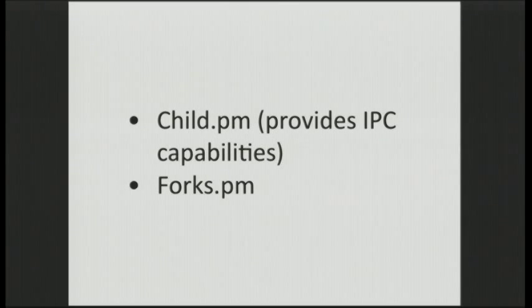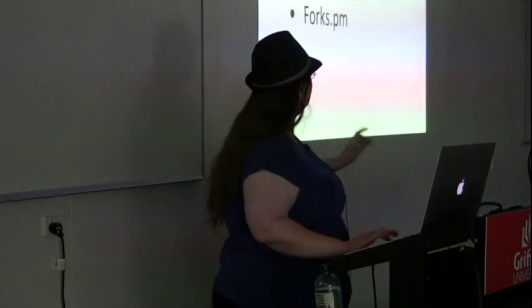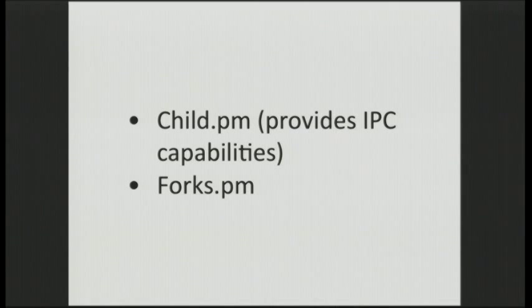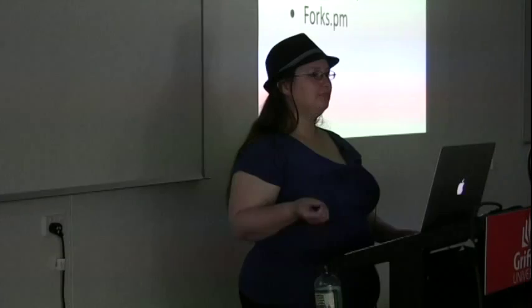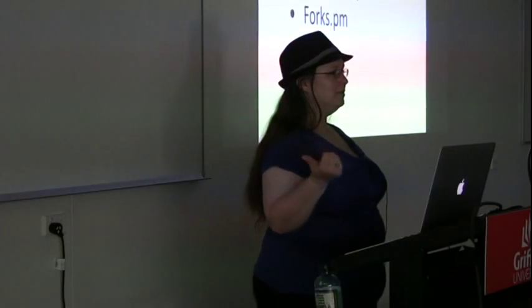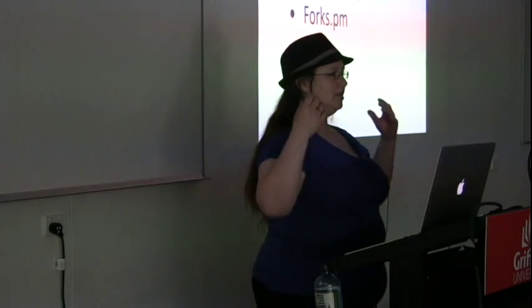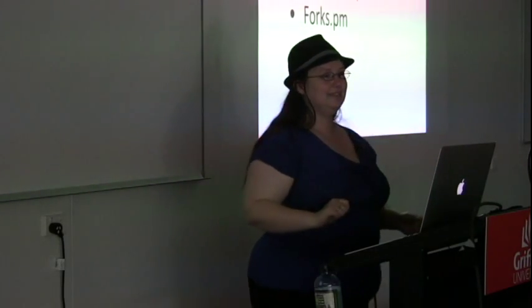Are there alternatives to Parallel::ForkManager? Absolutely. Child.pm is a beautiful solution that even provides some basic IPC capabilities so the parents can talk to the children and sort of vice versa - the children don't tend to know about each other, but they can run off and do things asynchronously, and that works really well. Forks.pm is another alternative - it's actually a drop-in replacement for threads.pm, implementing the whole threading interface via forks underneath, which is kind of neat.